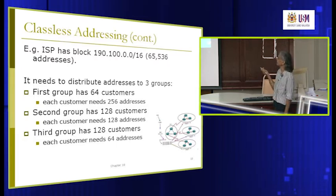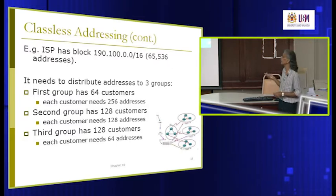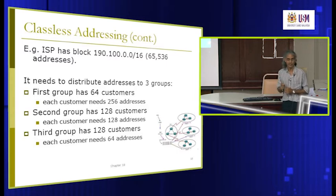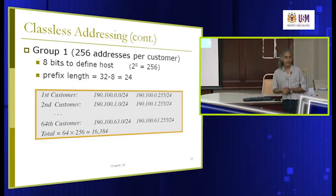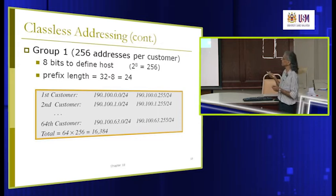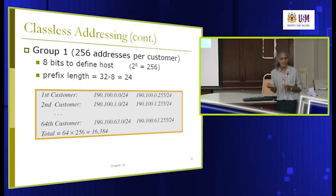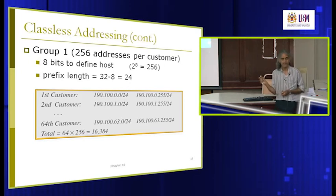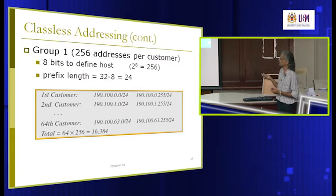One ISP has a class B address, slash 16, which means 2 to the power of 16 — about 65,000 usable IP addresses. Customers come and request addresses, so the ISP subdivides accordingly. Group 1 has 64 customers each requiring 256 addresses. 256 means 2 to the power of 8, so 8 bits for host ID, making the prefix slash 24 (32 minus 8). Each customer gets a slash 24 block.